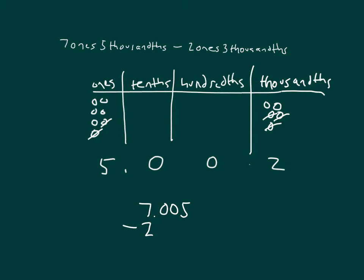5 minus 3 is 2. And we have zeros in the hundredths place and also in the tenths place. And then 7 minus 2 ones is 5 ones.